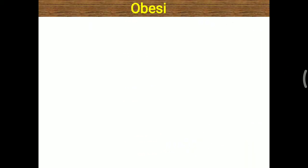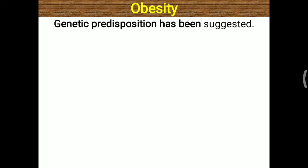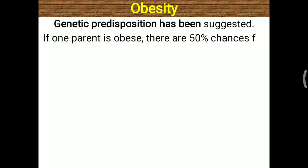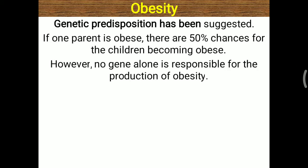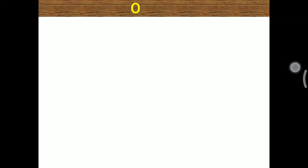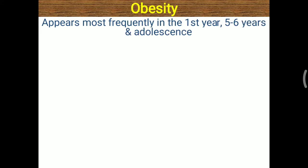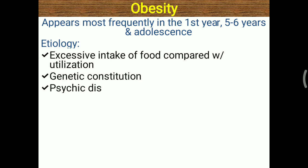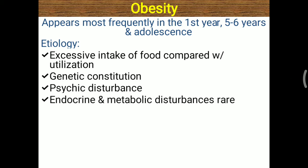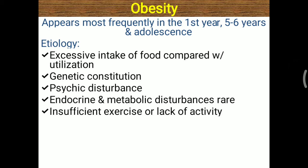Genetic predisposition has also been suggested. If one parent is obese, there are 50% chances of children becoming obese. However, no single gene alone is responsible for obesity. Obesity appears most frequently in the first year of life, between the fifth and sixth year, and in adults. The main etiology is excessive food intake compared to utilization. Genetic constitution, psychic disturbance, endocrine and metabolic disturbances, and insufficient exercise are also contributing factors.